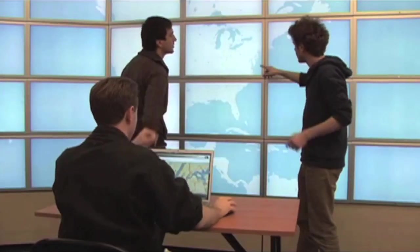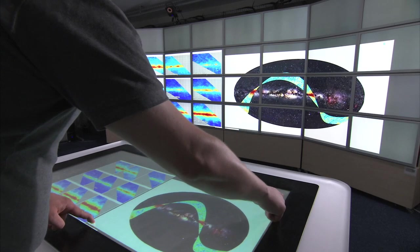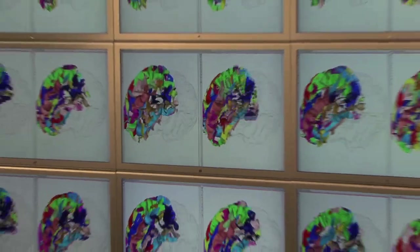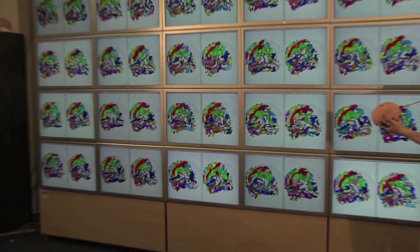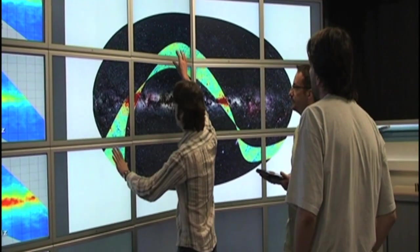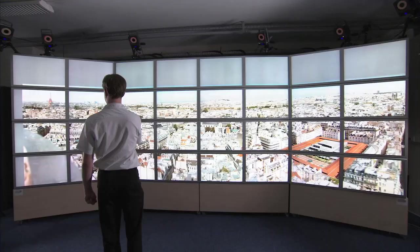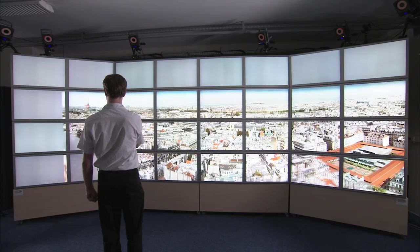The WILD platform is a multi-surface interactive environment that we created to explore the next generation of interactive systems. WILD features a large, high-resolution wall display made of 32 30-inch screens.